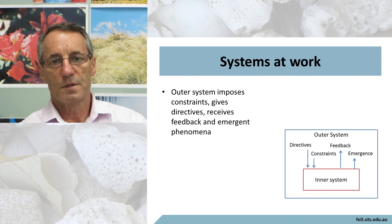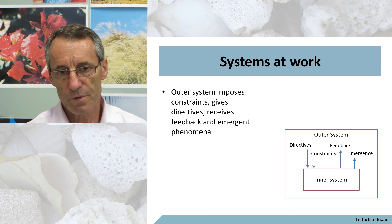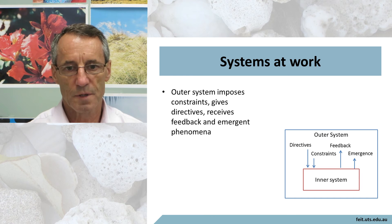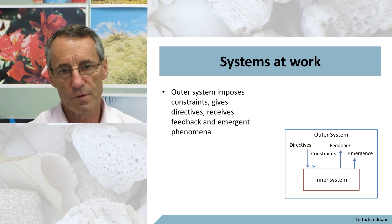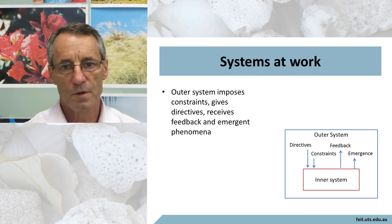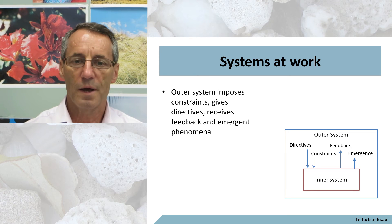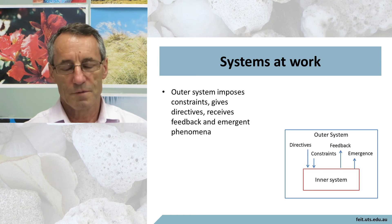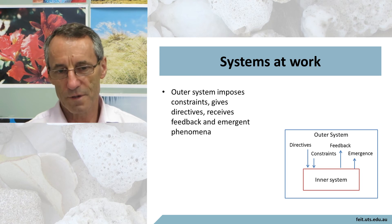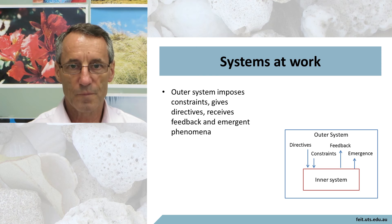Within any one system, the way they operate is: a system will impose constraints and give directives to the level below it, and it will receive back feedback, product, or some kind of output, and emergent phenomena. The devil is in the details and it's not entirely simple, but that's a reasonable summary of how systems operate.